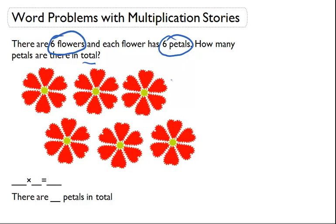So what I can do is make a multiplication story. I have six flowers times six petals, because each of these has six petals on them. And when I multiply that together I get 36.